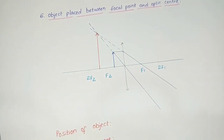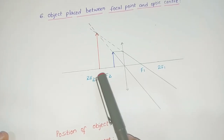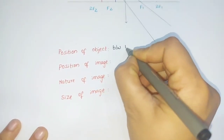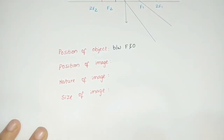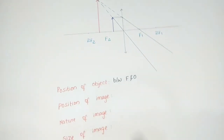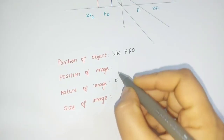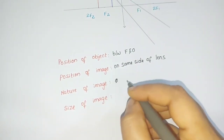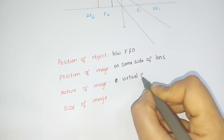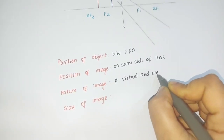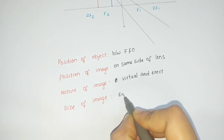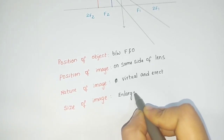The size of the image is much larger than the size of the object. Characteristics: position of object — between F and O. Position of image — on the same side of the lens. Nature of image — virtual and erect. Size of image — much bigger than the object, so we write enlarged.